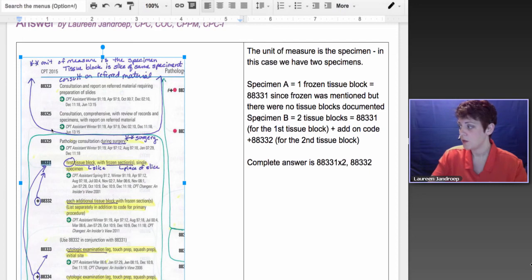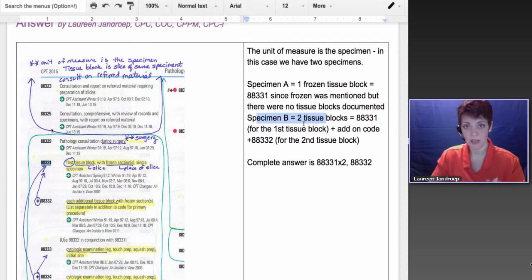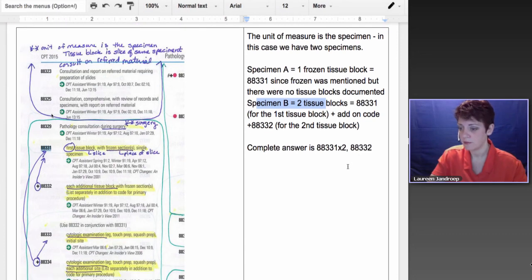Then for specimen B, we had two tissue blocks, so we need one unit of 88331 for the first block and then one unit of the add-on code for the second tissue block. The complete answer is going to be 88331 times two with one of the add-on code 88332. So that's how to figure out that answer.